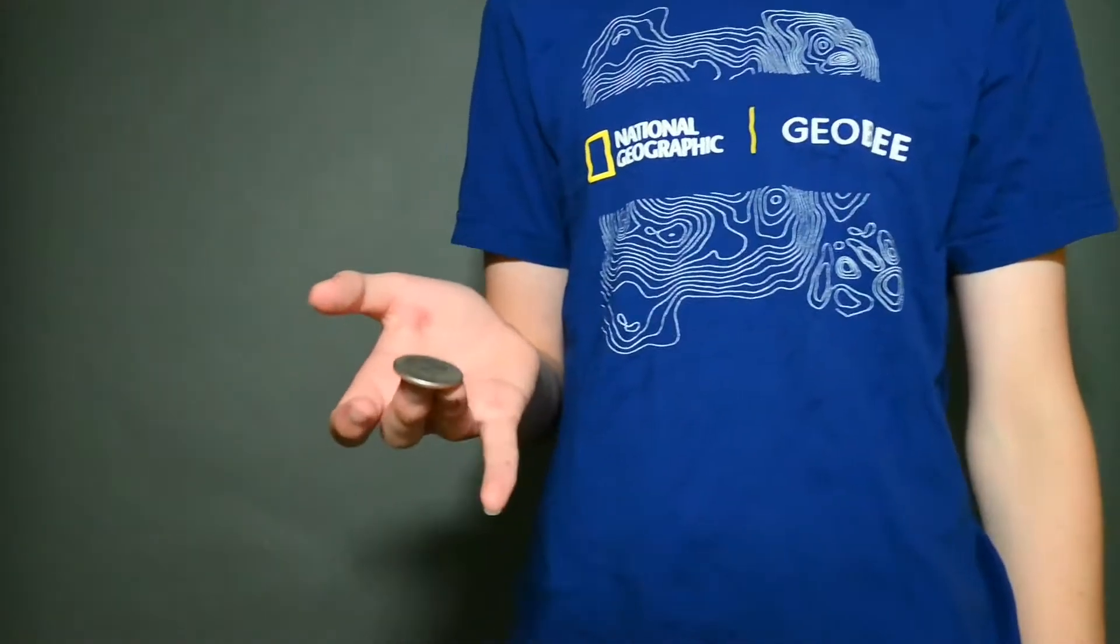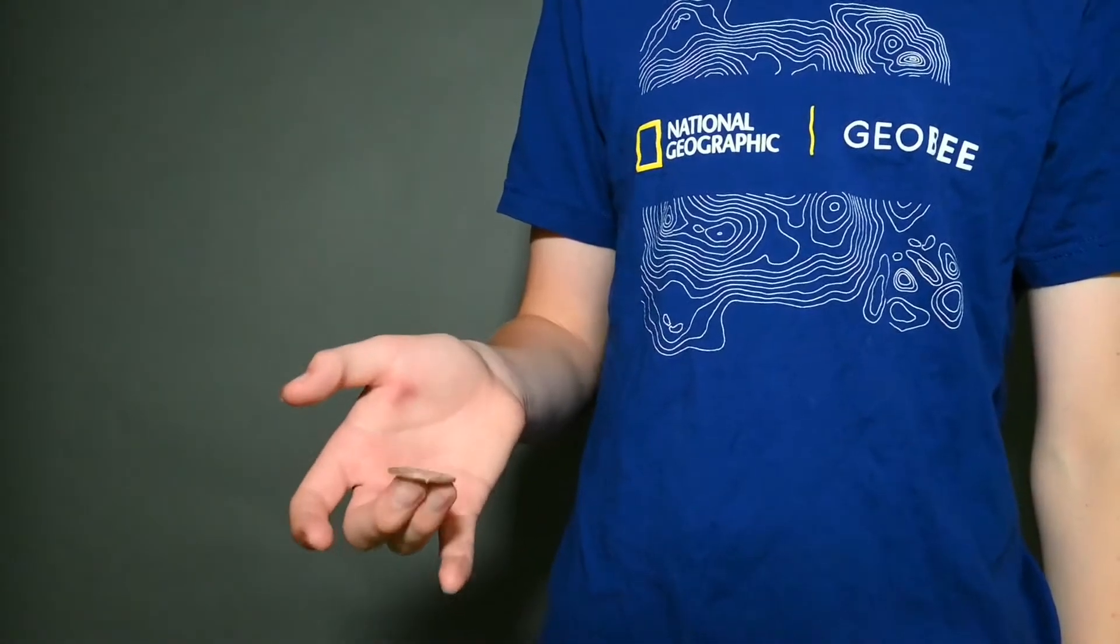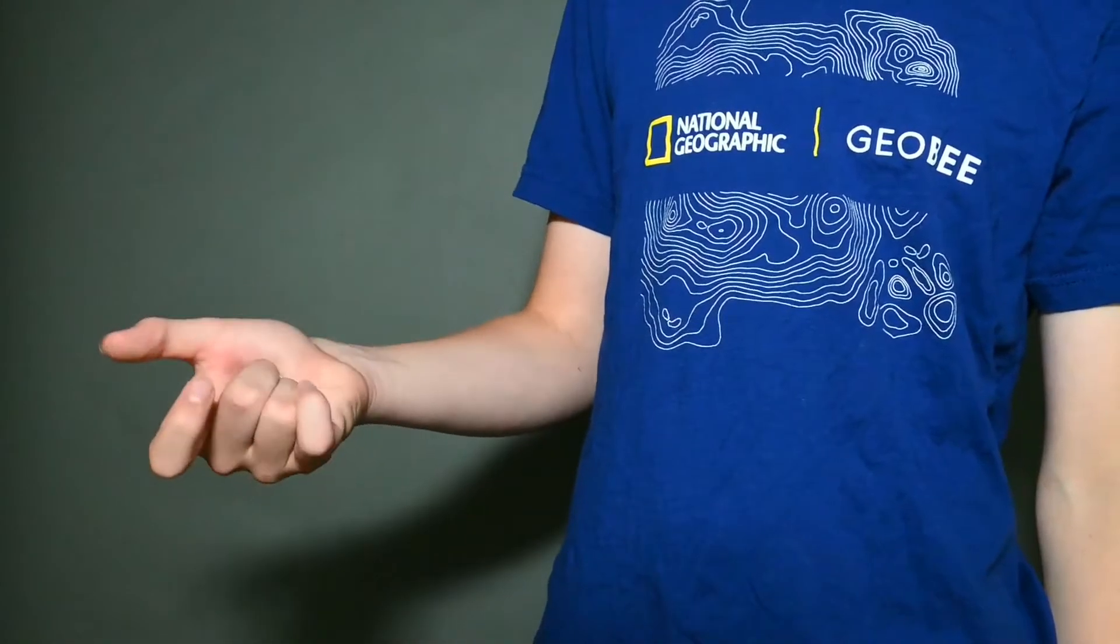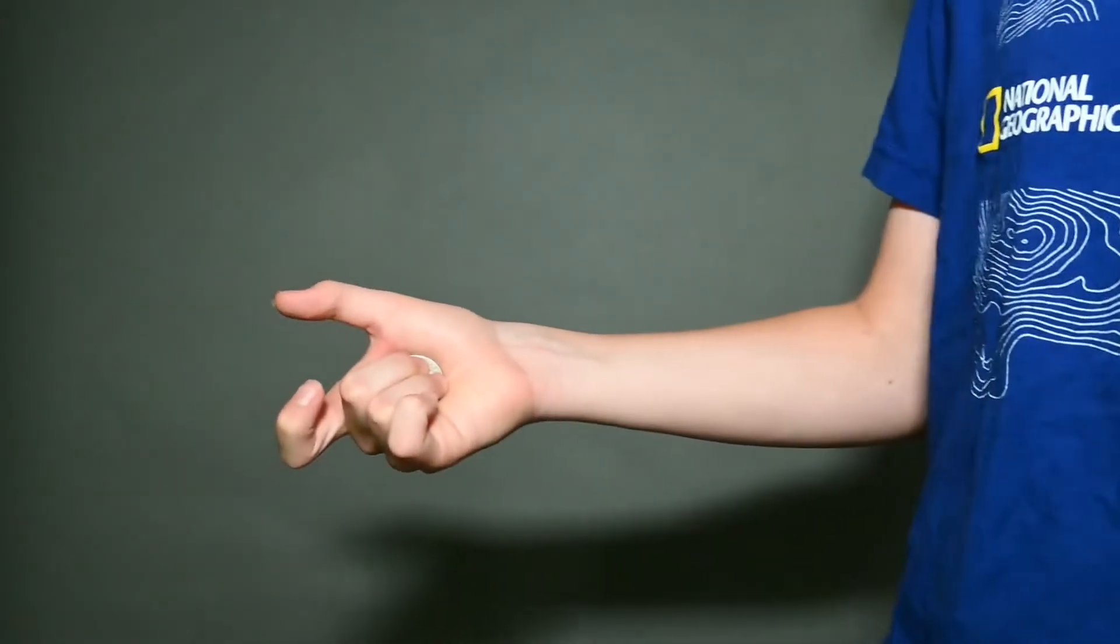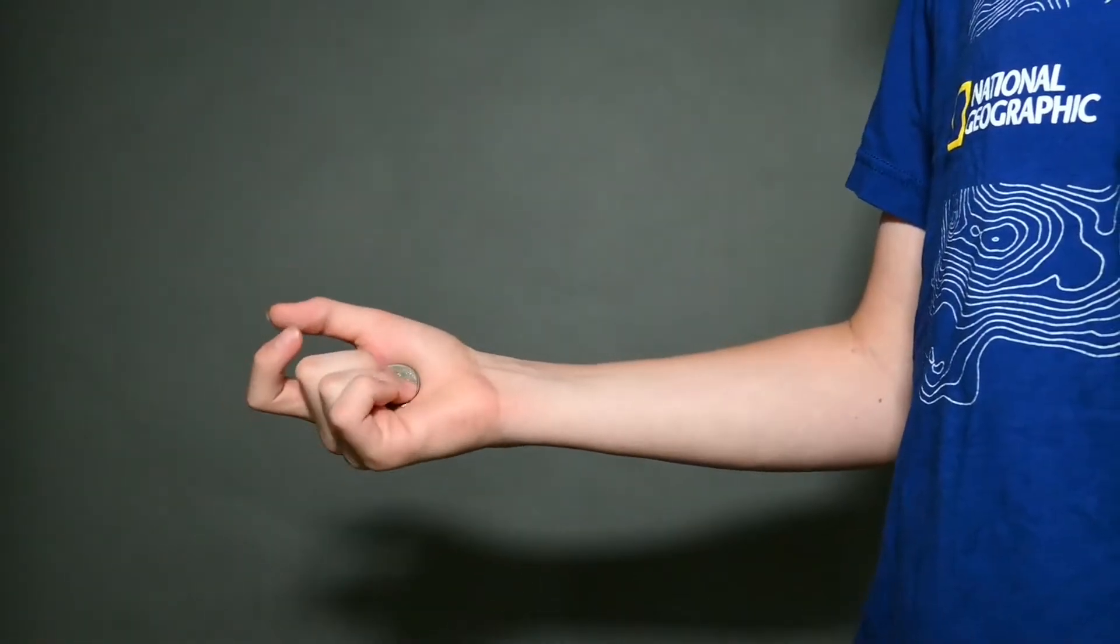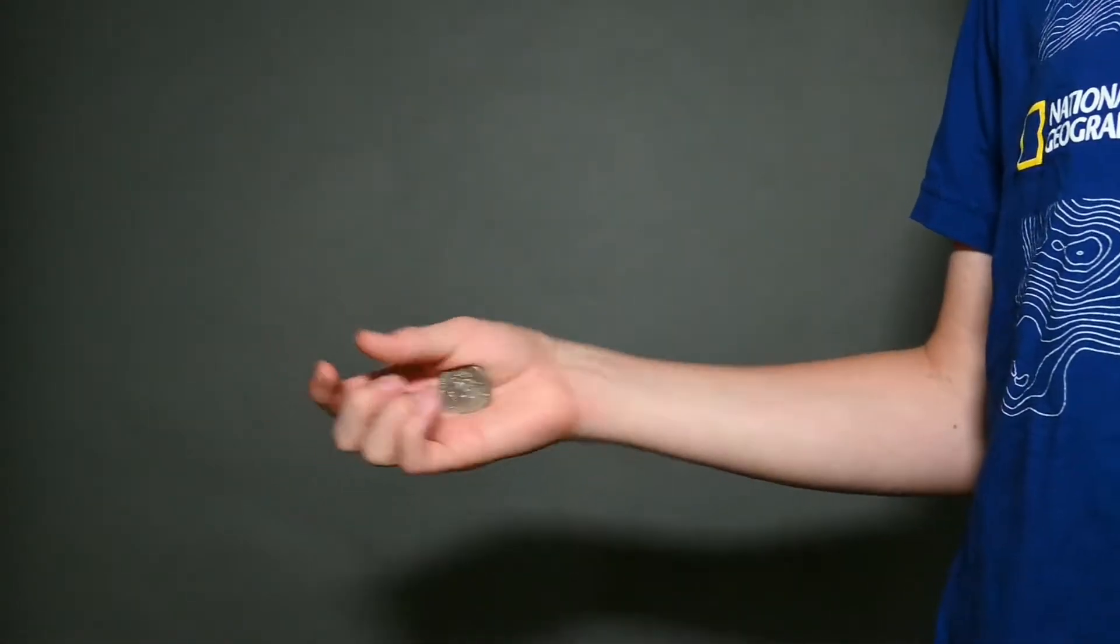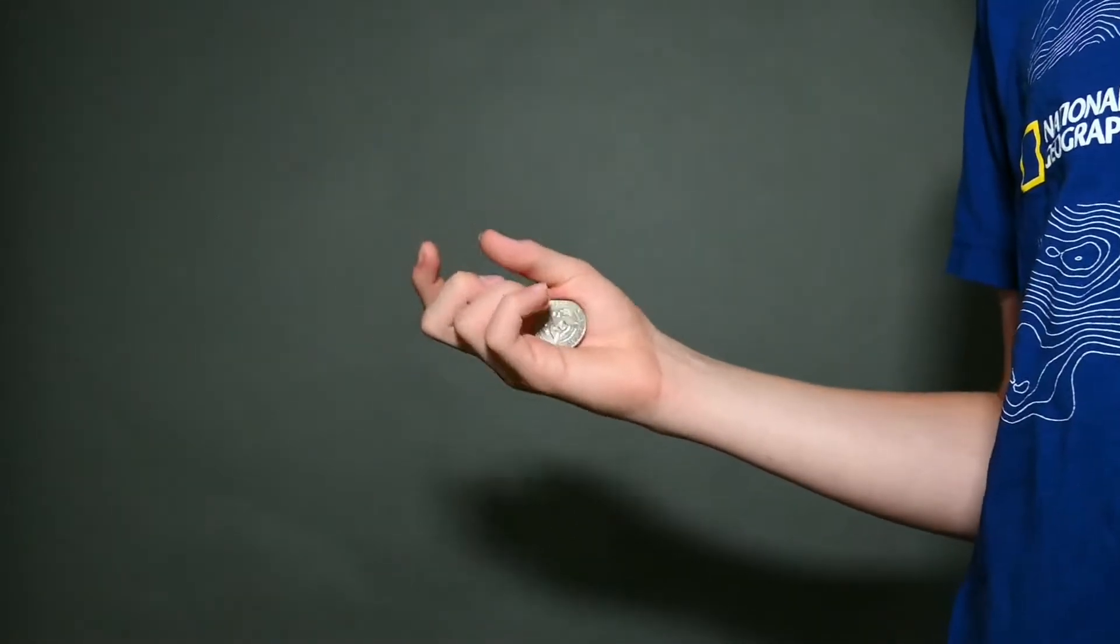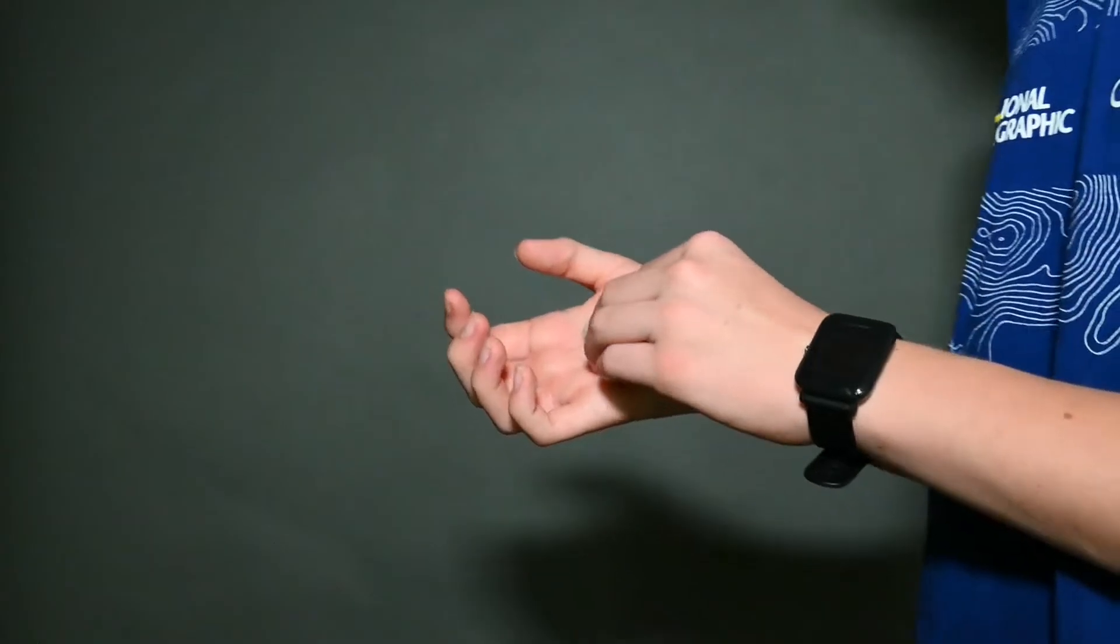So you're going to take your coin like this and retract your middle and ring finger so that it touches the palm of your hand, just like this. And that's going to load the coin into the palm, right in the position where the muscle pass should be performed.